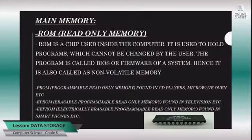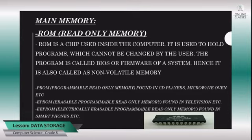In main memory we have two types: random access memory and read only memory. ROM stands for read only memory. During the manufacturing stage, the manufacturer loads a program called BIOS which tells the computer where the operating system is. The contents written to it cannot be erased, so this is also known as non-volatile memory — the contents cannot be erased even when the power is off. Nowadays we have different types of ROM: PROM (programmable read only memory), EPROM (erasable programmable read only memory), and EEPROM (electrically erasable programmable read only memory). These have different applications: PROM is used in CD players, EPROM is used in televisions, and EEPROM is used in smartphones.